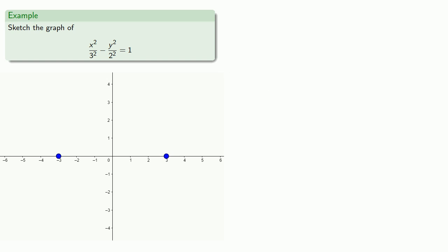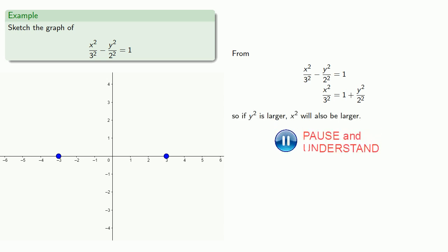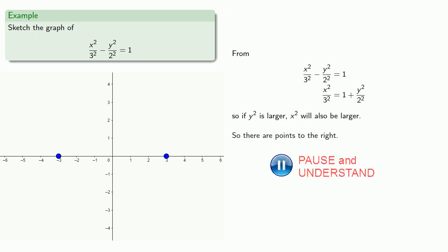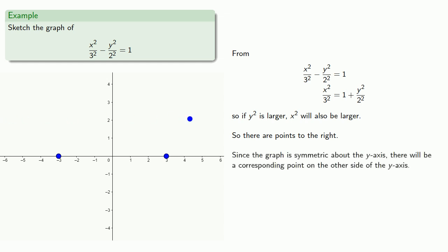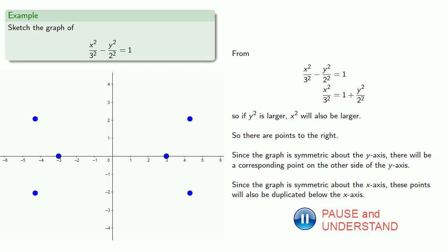Now, if we rearrange our equation a little bit, we note that if y squared is larger, x squared will also be larger. And so there are going to be points to the right of this point that we graphed. And since the graph is symmetric about the y-axis, there will be a corresponding point on the other side of the y-axis. And since the graph is symmetric about the x-axis, these points will also be duplicated below the x-axis. And so this hyperbola opens horizontally.